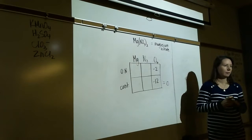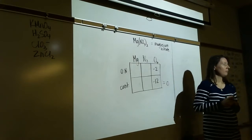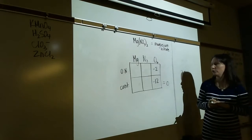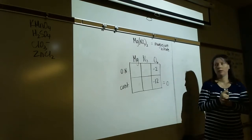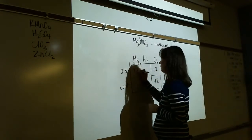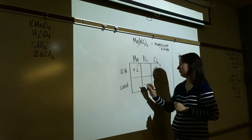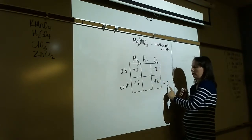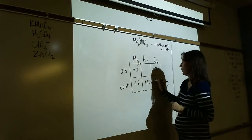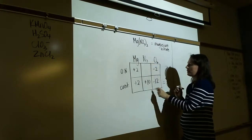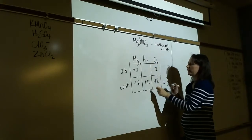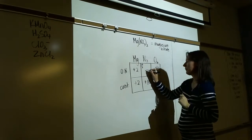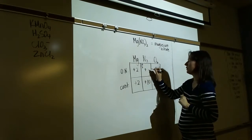Nitrate ion NO3- has a -1 charge, so contributions add up to -1. Oxygen is -2, three oxygens contribute -6. Nitrogen must contribute +5 to give a sum of -1. That follows the usually rule: group 5 is usually +5. Oxidation numbers: N=+5, O=-2.